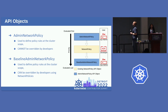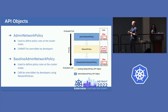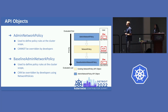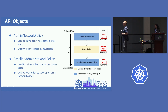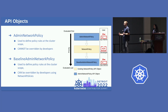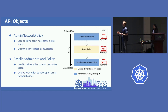We implemented these user stories with two new objects. The Admin Network Policy object is used to define rules which cannot be overridden by developers — i.e., they cannot be overridden by network policy. The Baseline Admin Network Policy object specifically satisfies use case 5, flipping the default cluster stance from allow-all to deny-all, and these can be overridden by developers using network policies. Admin network policies and baseline admin network policies are defined for the system admin, while network policies are always for the developer.